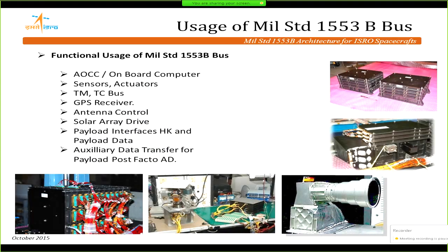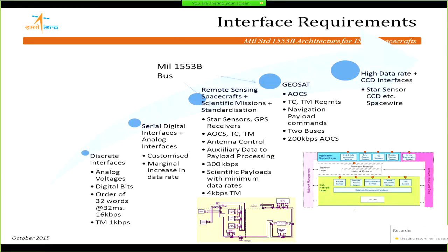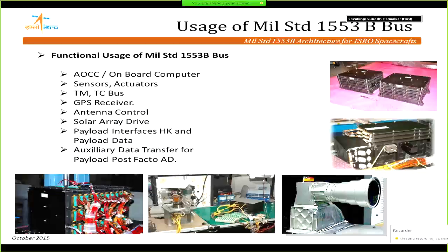The various 1553 bus elements include the onboard computer, various sensors, actuators, housekeeping systems, GPS receivers in LEO orbits, antenna control for downlinking data to stations, solar array drive, payload interfaces, and a lot of housekeeping auxiliary data — all transferred over the 1553 bus.